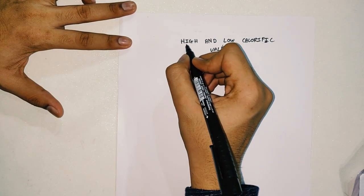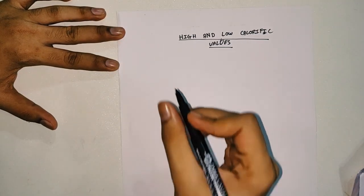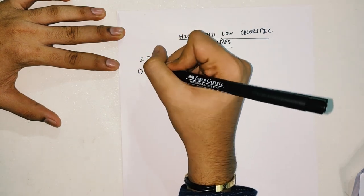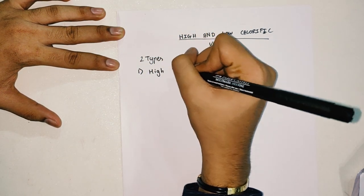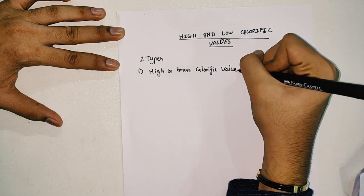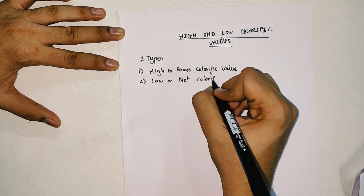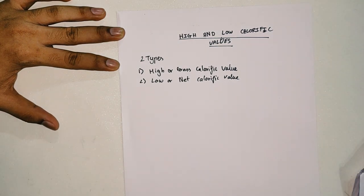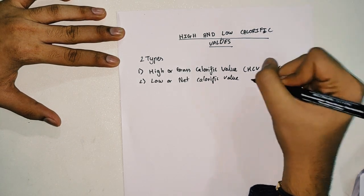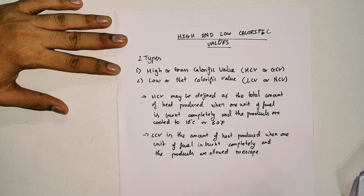In this video we'll be doing sums about high and low calorific values. Before we dive into the numericals, you need to know that there are two types of calorific value. The first type is high or gross calorific value, and the second type is low or net calorific value. These can be abbreviated as HCV or GCV, and LCV or NCV.